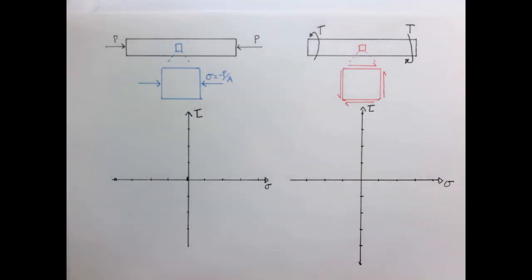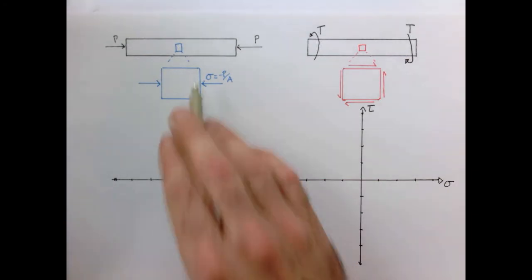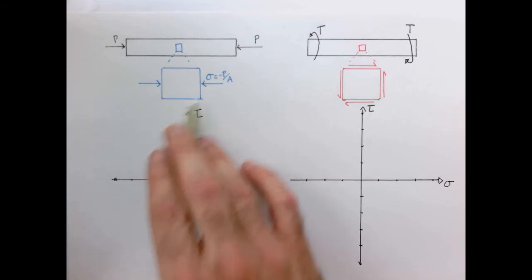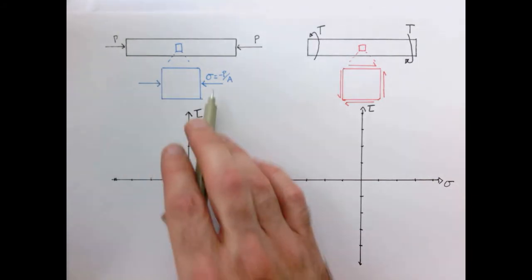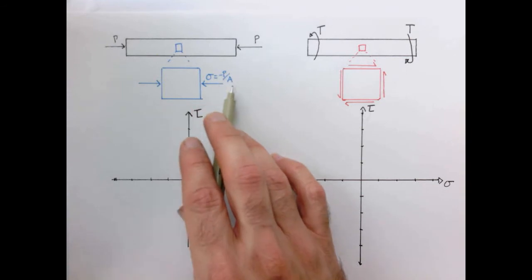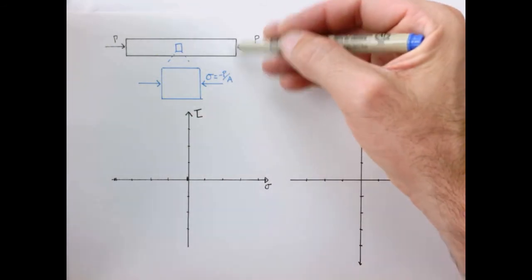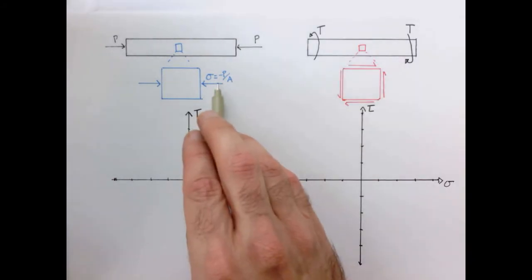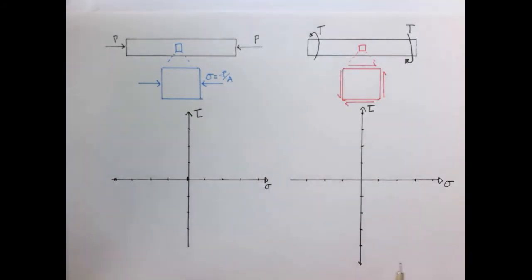So let's quickly revisit and redo two of our classic cases. So over here, I have a member in compression. I extract a little element out and I draw its free body diagram, which in this case just has a uniform compressive stress of magnitude P over A, where A is just the cross-sectional area of this column. And I've written it as negative using our sign convention that compression is negative.